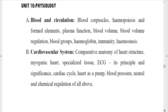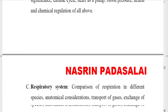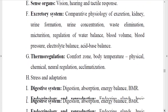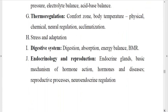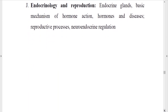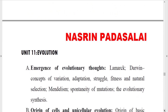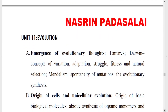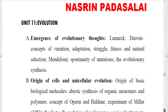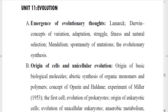Human Physiology includes all types of systems: the circulatory system, excretory system, respiratory system, nervous system, digestive system, and endocrine system. The endocrine system is very important.